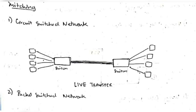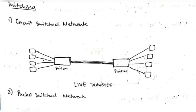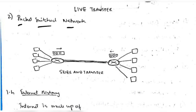Switching is a very important topic. A switch takes data from devices and transfers it to another network. For live transfer, a circuit switch network is used — the switch transfers data directly without storing it. In a packet switch network, the switch stores the data first and then transfers it one by one, so it's not live but a store-and-forward approach.